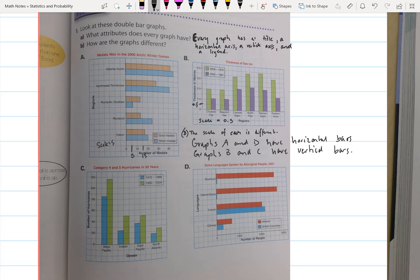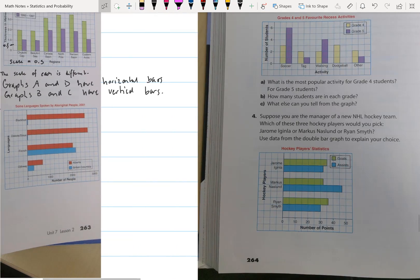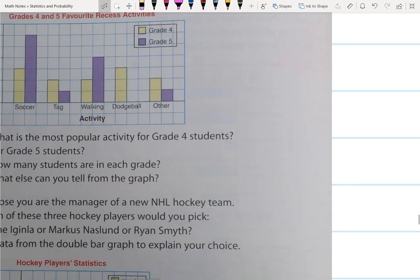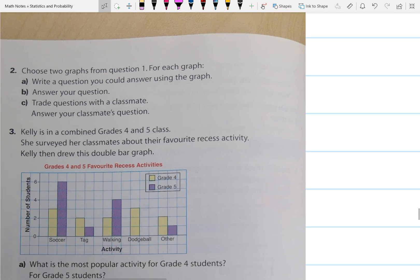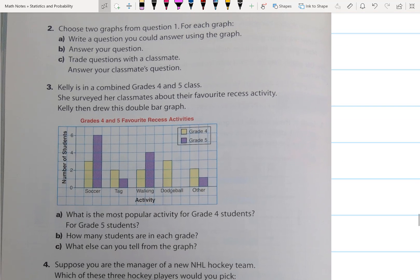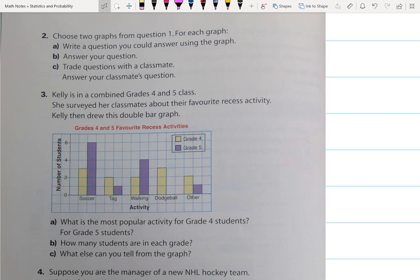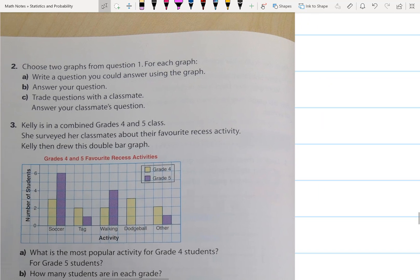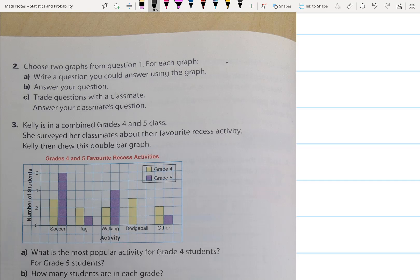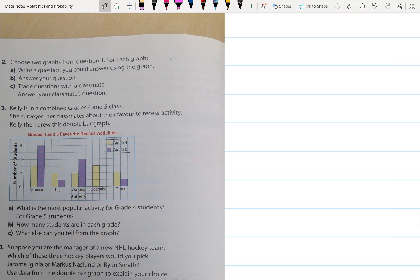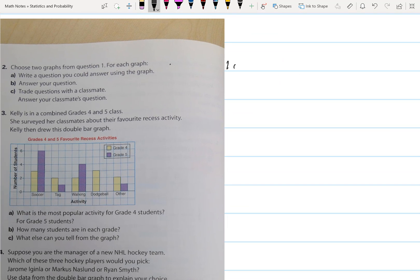Moving on to question 2 on the next page, which is page 264. Choose two graphs from question 1. For each graph, write a question you could answer using the graph. So let's take a look at graph A. This is 2A.